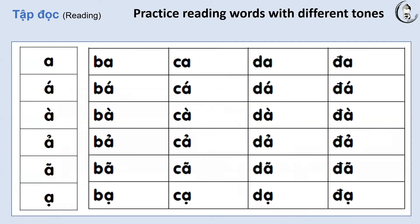Let's go tone by tone. Listen and repeat after me. Letter A with no tone mark. Pay attention that this is a neutral or flat tone — no up, no down. A. Ba. Ca. Da.